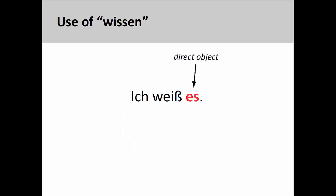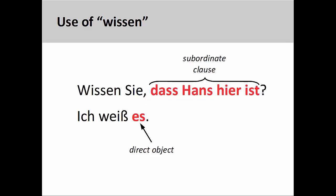Finally, Wissen can also take a direct object — here a third-person singular neuter personal pronoun: 'Ich weiß es' — I know it. However, this can only be done if the fact to which this pronoun refers has already been established. For example, the fact that Hans is present, expressed in the subordinate clause in the first sentence, is referenced by the personal pronoun in the second sentence.